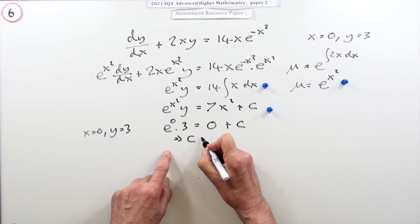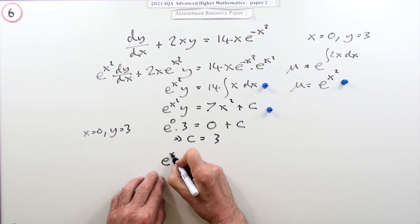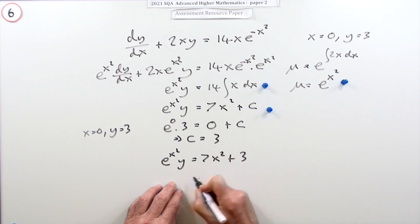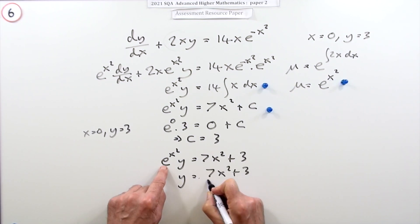Which means I can now finish that one off. E to the x squared y is 7x squared plus 3, so y will be 7x squared plus 3 take that multiplying factor across and divide over e to the x squared for the final mark.